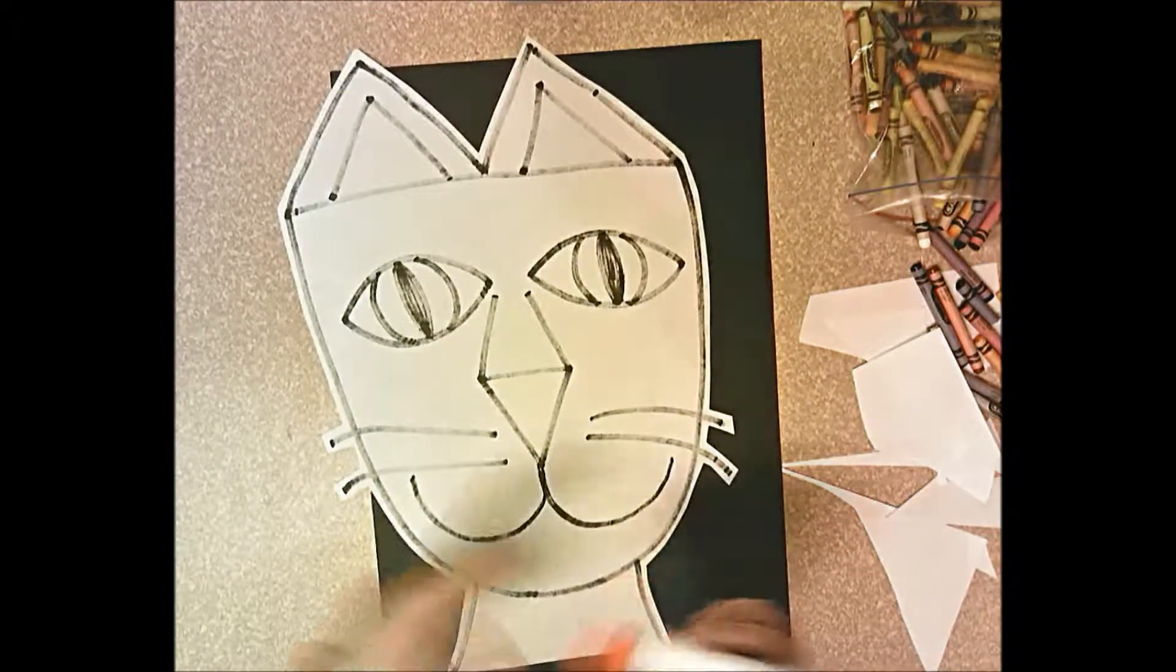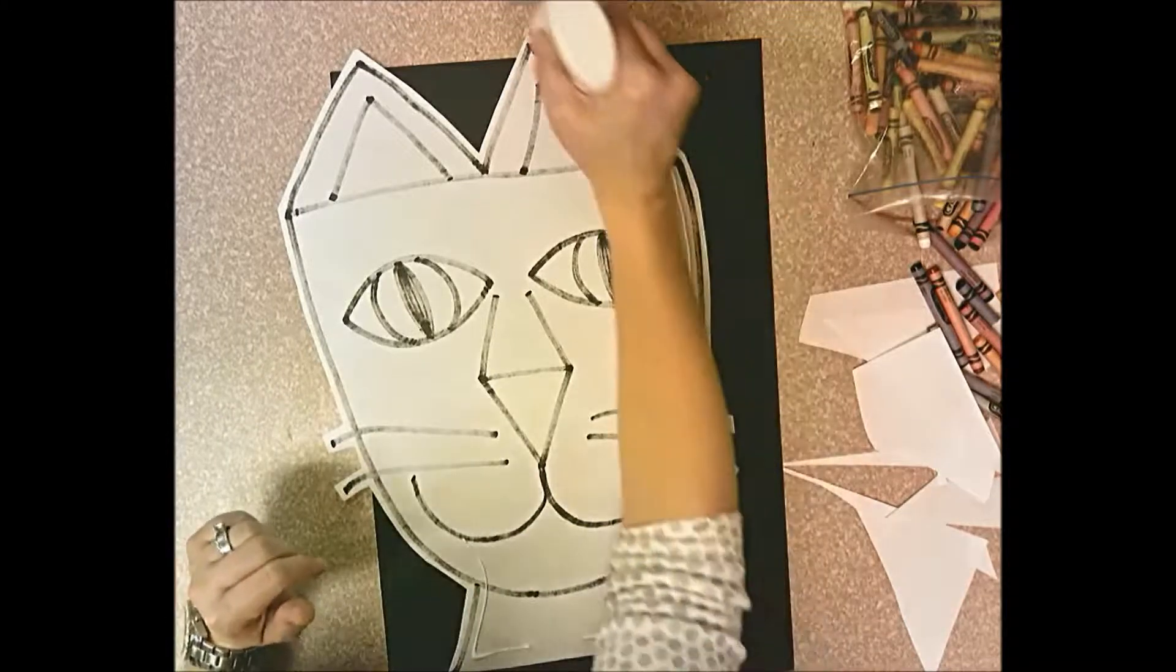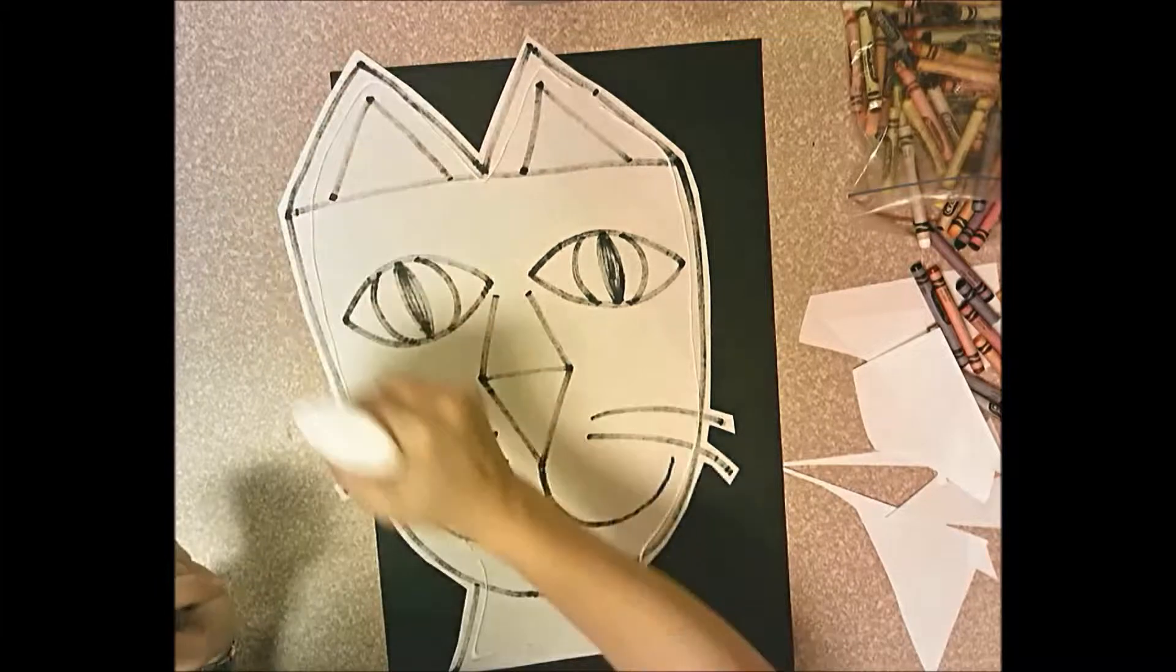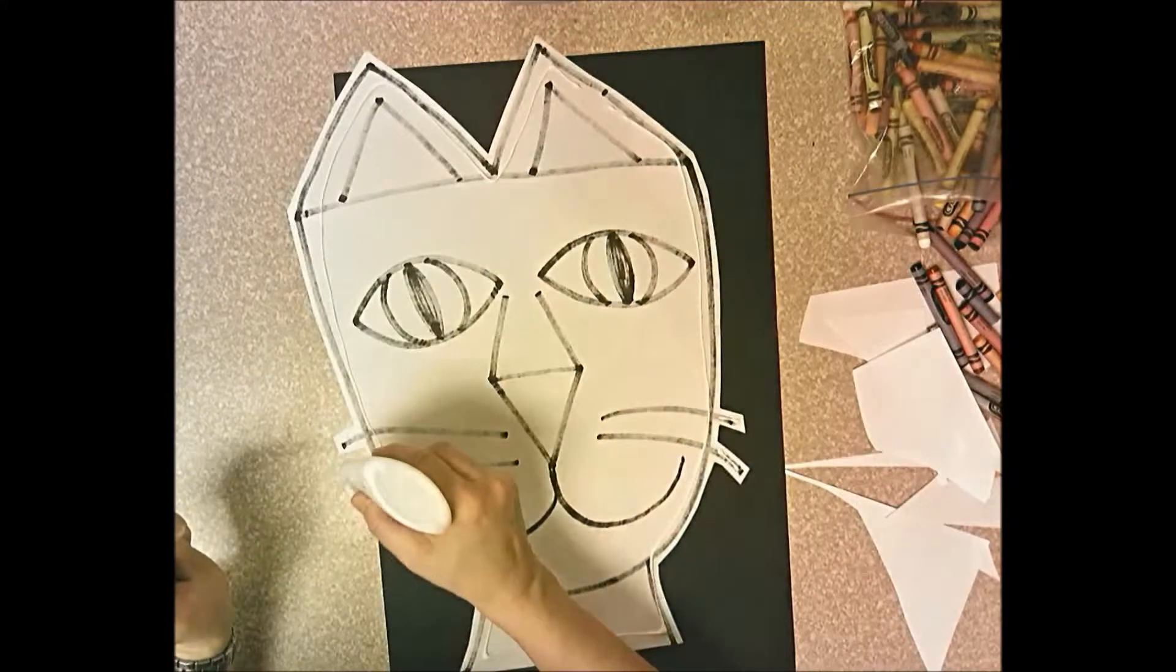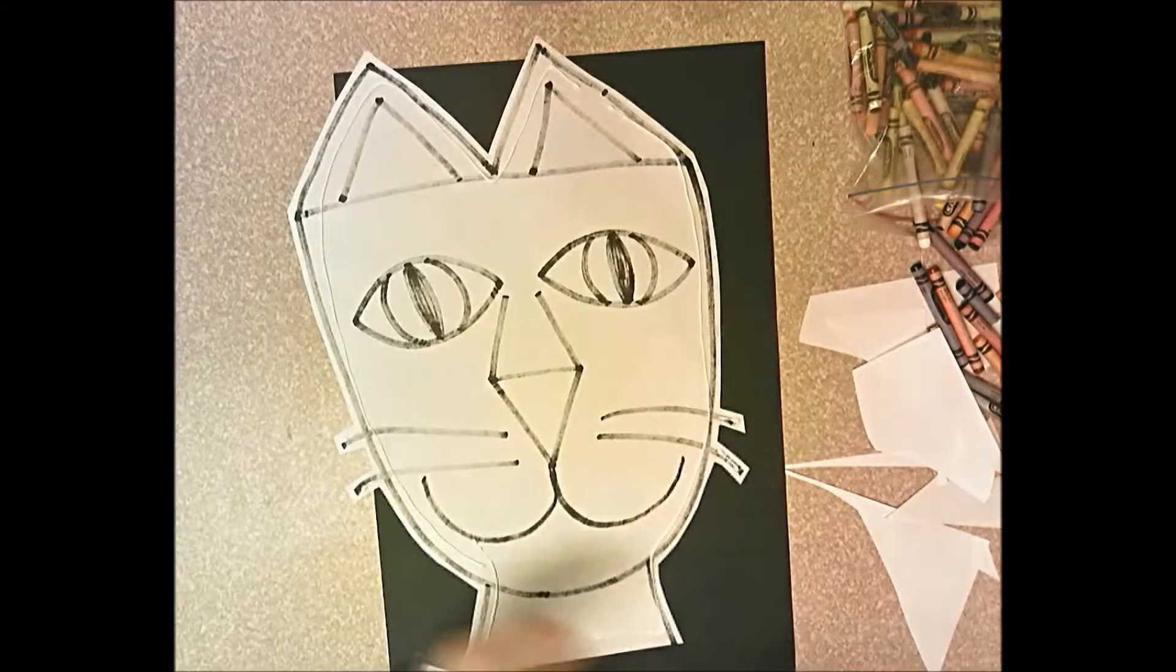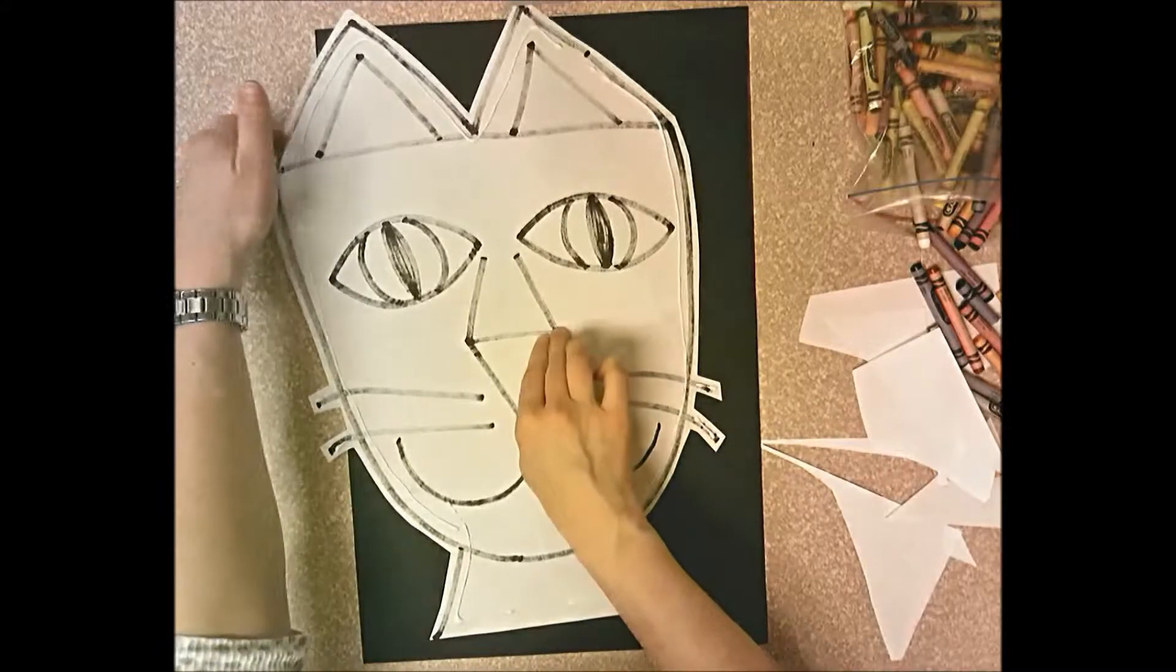You're going to flip it over and then you're going to flip your cat over and you're going to put a frame of glue along the edge. Don't put it too close to the edge so it squirts out. You're going to do a frame of glue all the way around. Add a little bit to the whiskers so they don't flip up. And then you're going to glue this to the bottom of the black paper. This neck is going to line up with the bottom of the black paper.